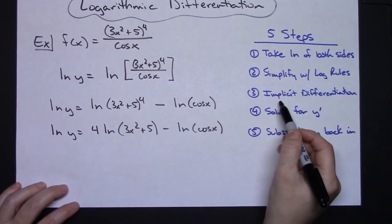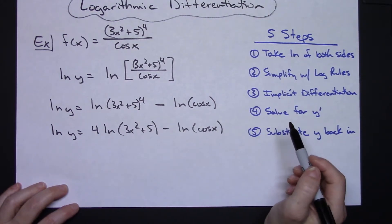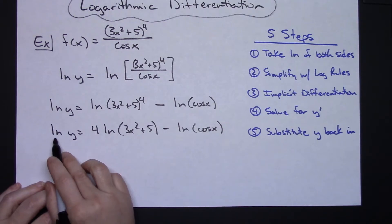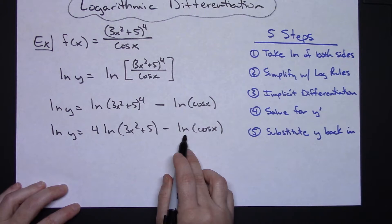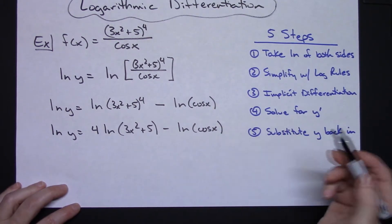Now third step says to take the derivative using implicit differentiation. So hopefully you remember how to take the derivative of a natural log function. Formula is u prime over u.